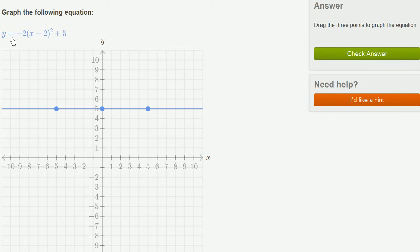We're asked to graph the equation y equals negative 2 times x minus 2 squared plus 5. So let me get my scratch pad out so we can think about this. So it's y equals negative 2 times x minus 2 squared plus 5.